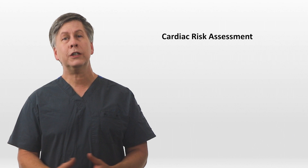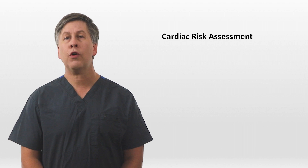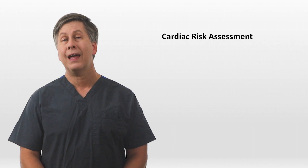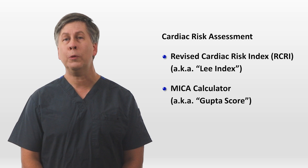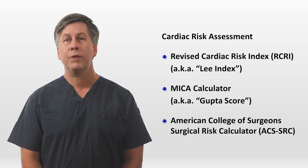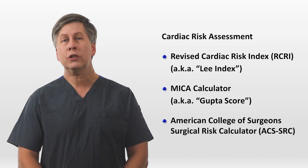Although cardiac risk is just one component of the preoperative evaluation, I'll spend a few extra minutes on it because it's usually the most important component. In the US, there are three models used to predict perioperative cardiac risk. The most common is the Revised Cardiac Risk Index, sometimes called the Lee Index. Another is the MICA calculator, also known as the GUPTA score — MICA standing for Myocardial Infarction or Cardiac Arrest. The last is the American College of Surgeons' surgical risk calculator. All are validated clinical prediction tools that incorporate patient and procedural variables to determine the percentage risk of a major cardiac event following surgery.